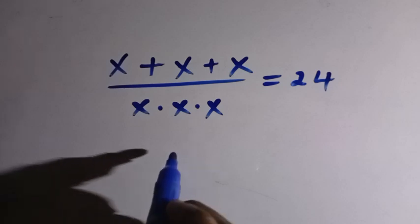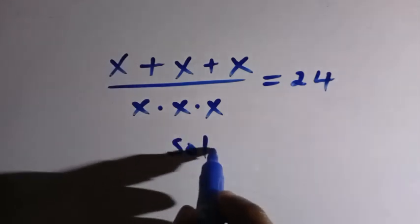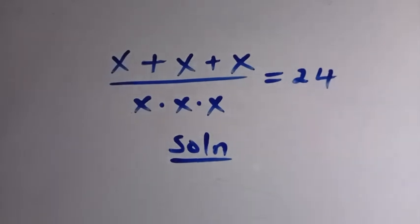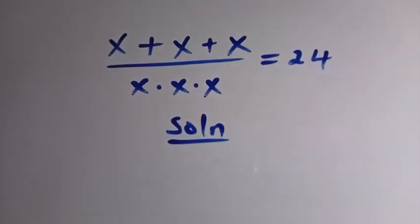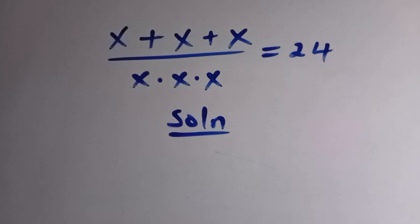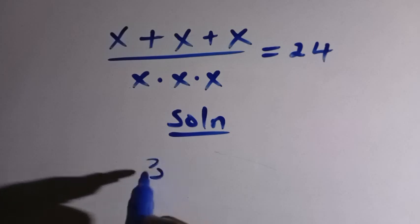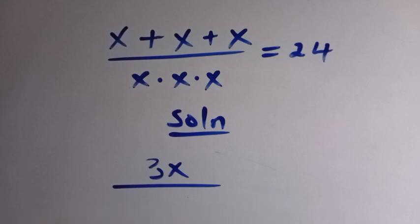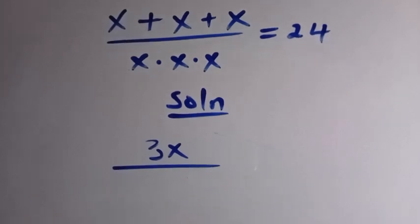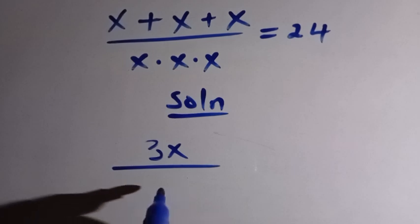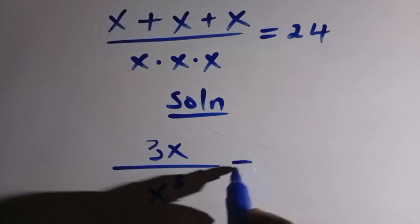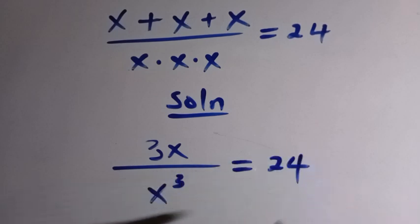So to solve this, we consider this solution here. From the first step, we add the numerator which is addition of 3x, and that gives us 3x divided by... and here is the multiplications. By applying the rule of indices, we multiply all the x together and we have x raised to the power 3. So this equals 24.